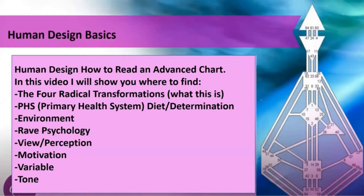The primary health system, also referred to as PHS, which is also known as diet and determination. The environment, the rave psychology, which includes the view, perception, and motivation. I'm also going to show you where you find the variable and the tone.